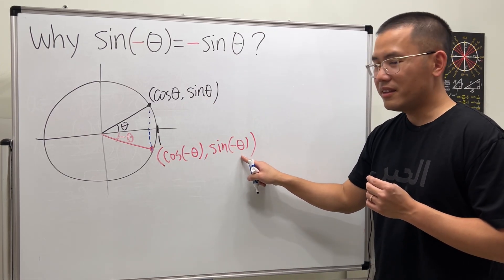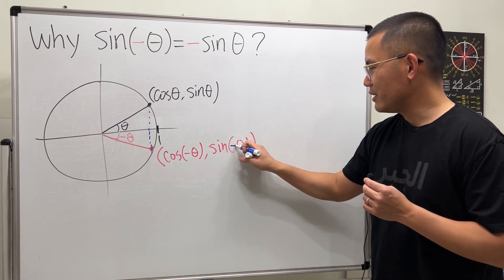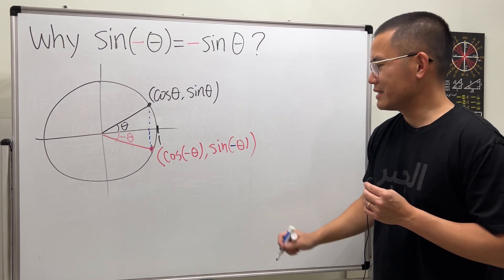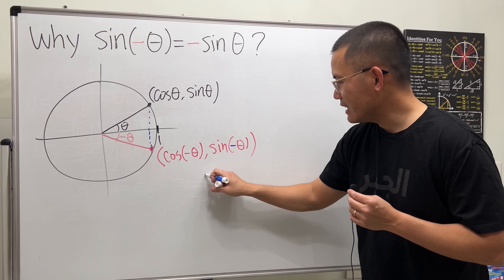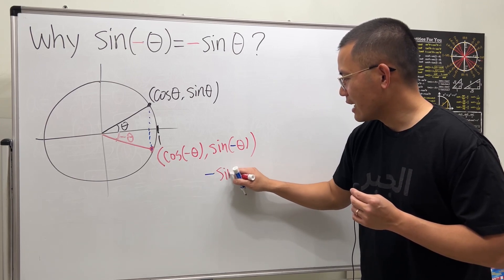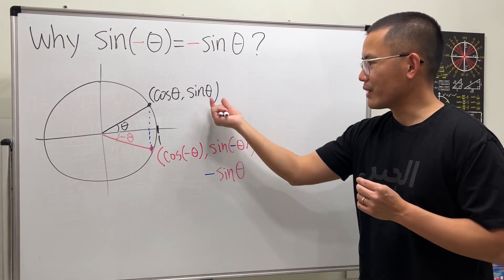So sine of negative theta, when we have a negative here, it's really just the same as putting the negative on the outside. And then sine theta. And this is from the original.